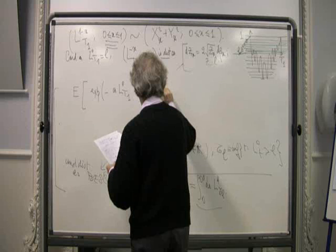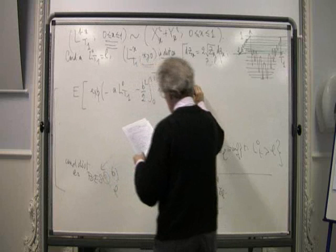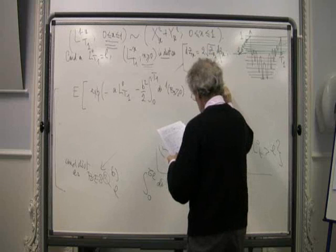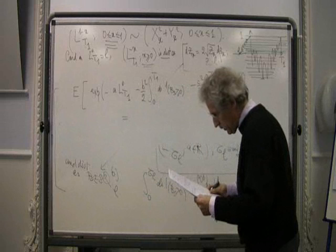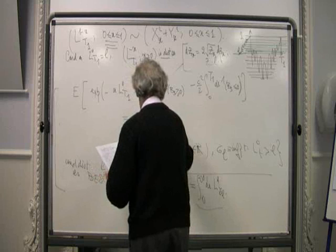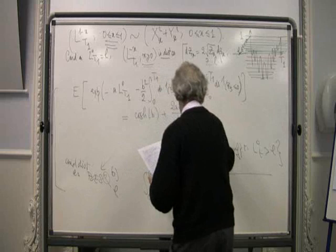The expectation of e to the minus A times L_0(T1), minus B squared over 2 times the integral from 0 to T1 of ds times the indicator B_s positive, minus C squared over 2 times the integral from 0 to T1 of ds times the indicator B_s negative — this is not very complicated to obtain — equals cosh(B) plus (2A plus C) over B, times sinh(B), to the power minus 1.